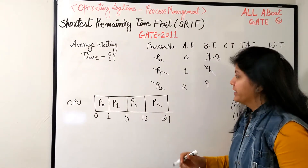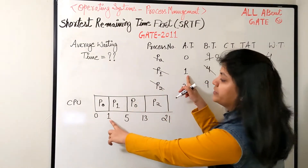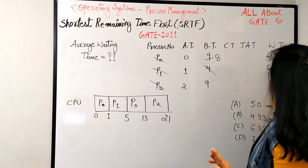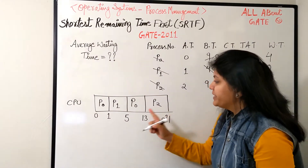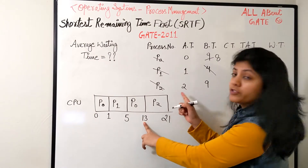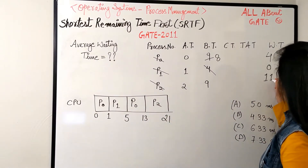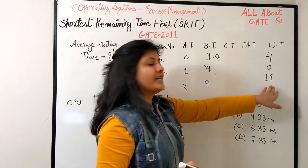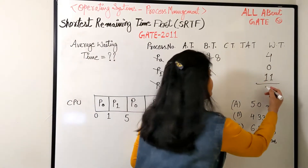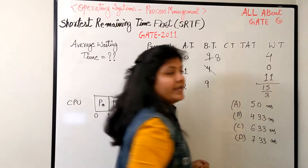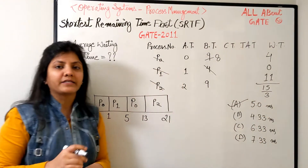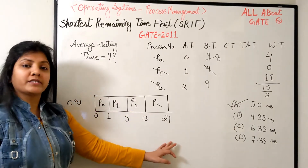P1 came at time one and was scheduled immediately, finishing right there, so its waiting time is zero. P2 was scheduled at 13 and came at time two, so 13 minus 2 is 11 - it had to wait for 11 bursts. Sum the waiting times: 4 plus 0 plus 11 is 15, divided by 3 is 5 milliseconds. That's the average waiting time.